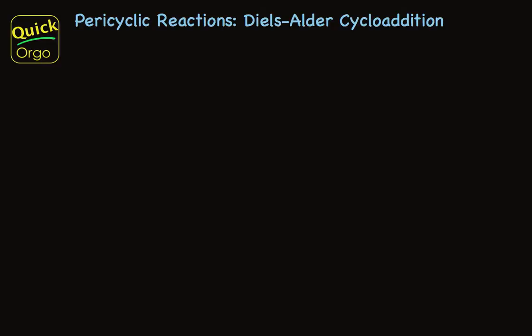The Diels-Alder cycloaddition is just one example of a type of reactions called pericyclic. There are several different types of pericyclic reactions. We'll focus on the Diels-Alder, which was the earliest discovered and is widely used.